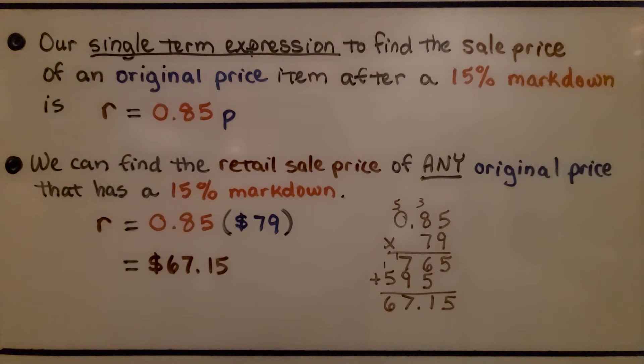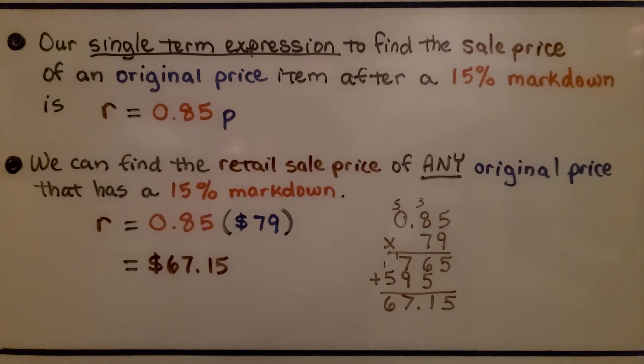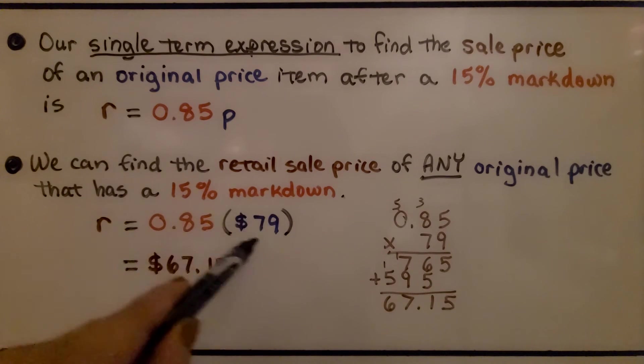Our single term expression to find the sale price of an original price item after a 15% markdown is R, for the retail sale price, is equal to 0.85 P. We can find the retail sale price of any original price that has a 15% markdown. The retail sale price R is going to equal 0.85 times whatever that original price is.